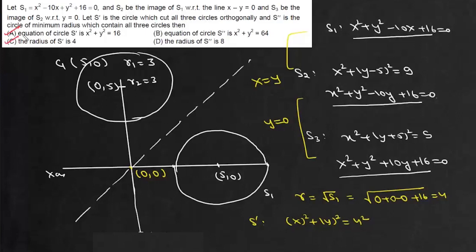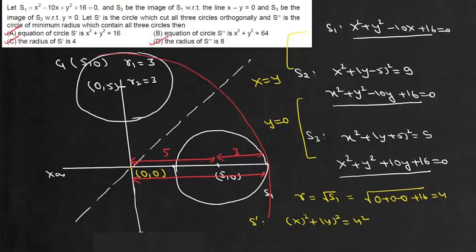For the circle S'' of minimum radius which contains all three circles, the center will again be at the origin. The radius equals the distance from the origin to the center of any outer circle plus its radius: that distance is 5 and the radius is 3, giving a total radius of 8. So the equation is x² + y² = 64, making option B correct and option D correct. The correct options are A, B, C, and D.